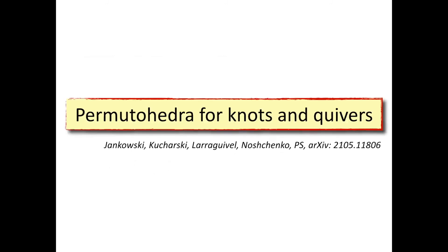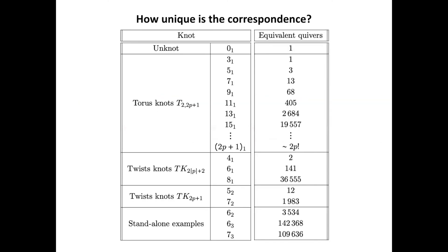What I have presented so far is a review of the original correspondence. Let me briefly discuss some more recent developments. The first is that quivers corresponding to knots are not unique — for a given knot, you can find several or sometimes quite many quivers that encode the same knot invariants. These quivers are related in some simple way, and understanding why these equivalent quivers arise is important. Via 3D-3D correspondence to 3D N=2 supersymmetric theories, this gives new families of dualities between such theories.